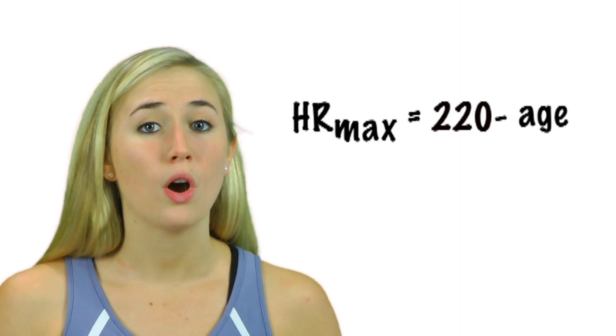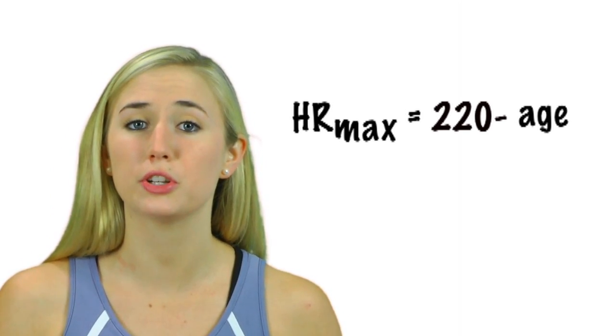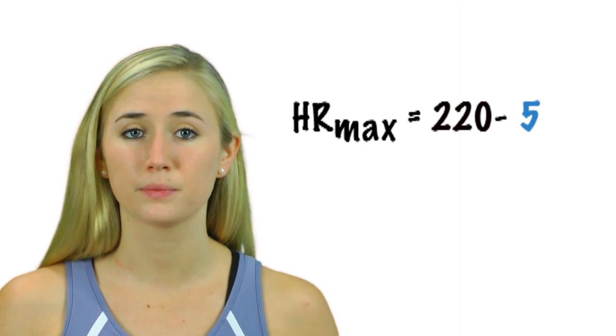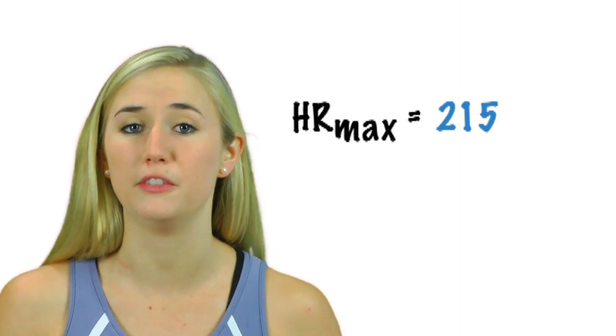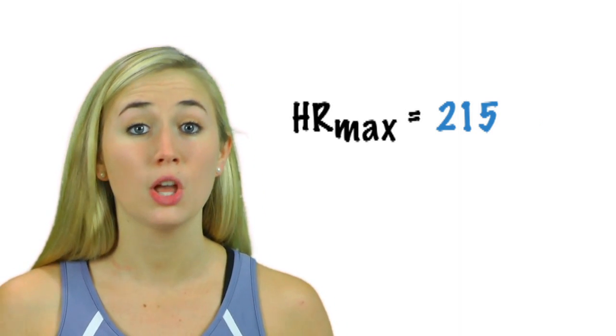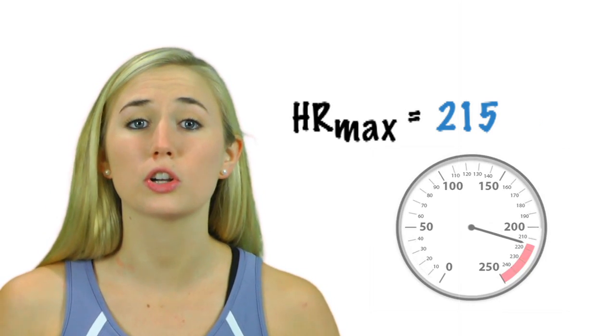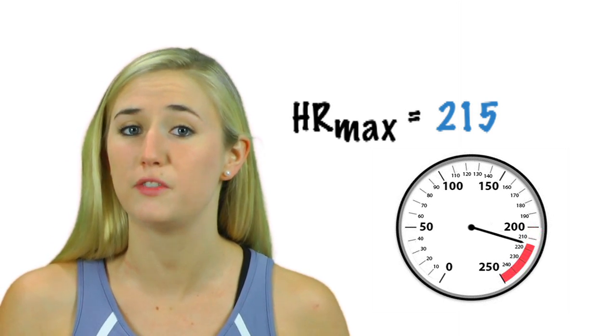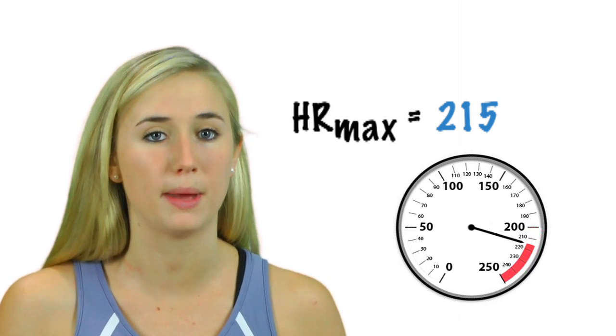Let's start with little Carter. He's 5. Let's put 5 in for the age and see what we get. Heart rate maximum equals 220 minus 5, which equals 215. So, Carter's approximate maximum heart rate is about 215 beats per minute.